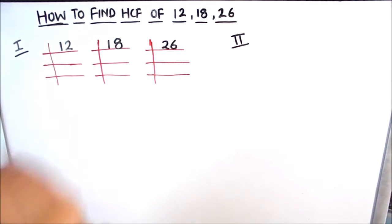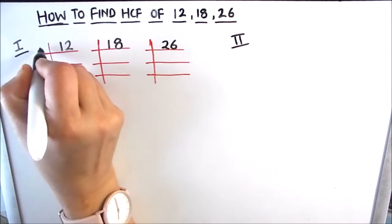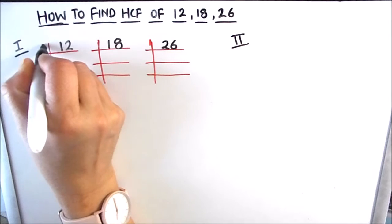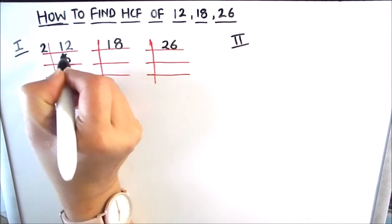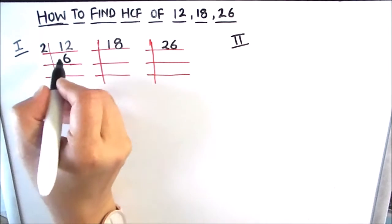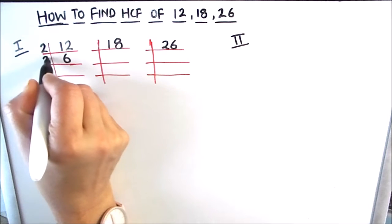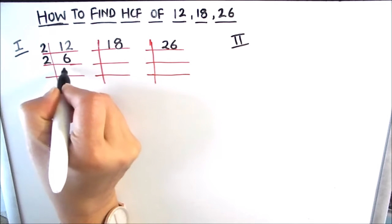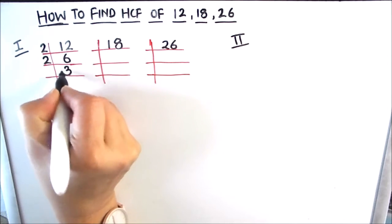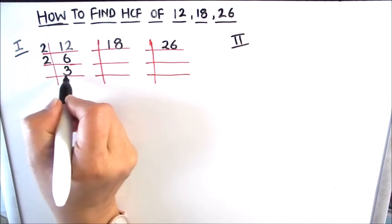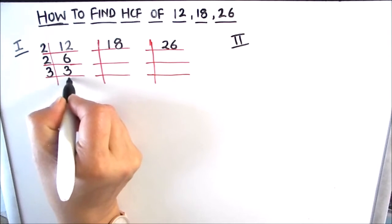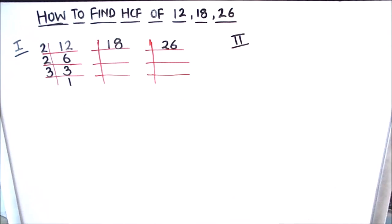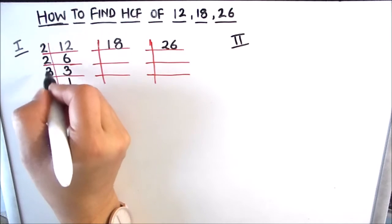Let's find the factors of 12 using prime factorization. 12 is fully divisible by the first prime number 2: 2 times 6 is 12. Again, 6 is an even number, it is divisible by 2: 2 times 3 is 6. And 3 is a prime number, only divisible by 3: 3 times 1 is 3. So we get the factors of 12 as 2, 2, and 3.